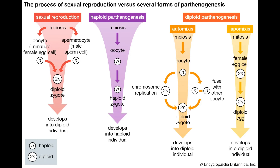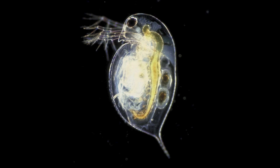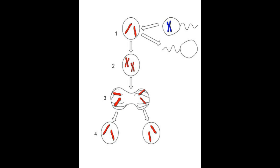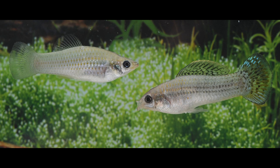In contrast to automixis is apomixis. During apomixis, the embryo develops directly from the parent, bypassing meiosis. This is common in aphids, cladocerans, and the plant families Asteraceae, Poaceae, and Rosaceae. One type of apomixis is pseudogamy, in which a sperm cell is needed to stimulate egg division but donates no genetic material, probably only centrioles. This is known to occur in the Amazon molly, Poecilia formosa, from northeastern Mexico and southern Texas.